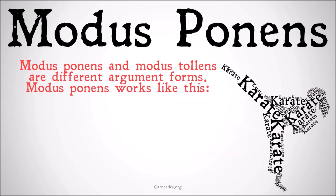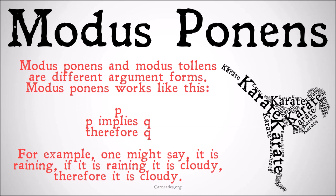First off, modus ponens and modus tollens are different argument forms. Modus ponens works like this: P — some statement P. P implies Q — if P, then Q. If that first statement is true, then some other statement must be true. Therefore, we can conclude Q. If we have those first two premises, we can conclude Q.